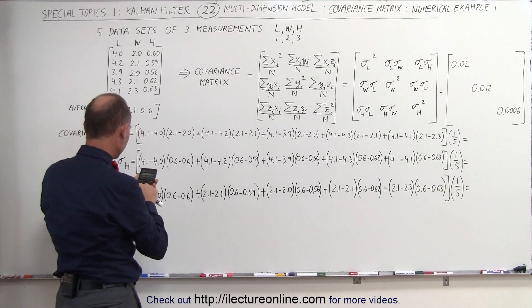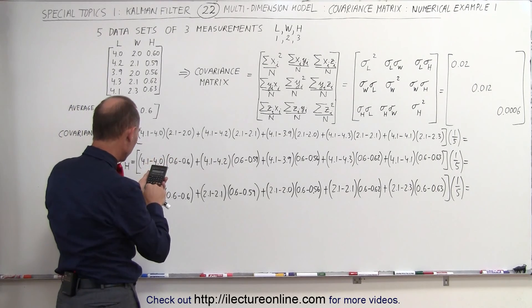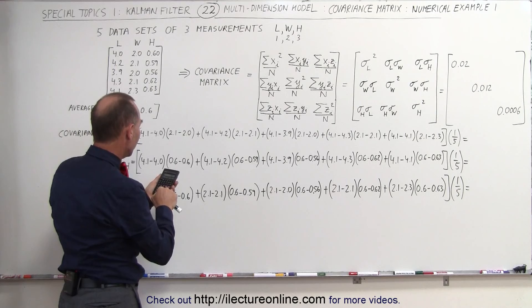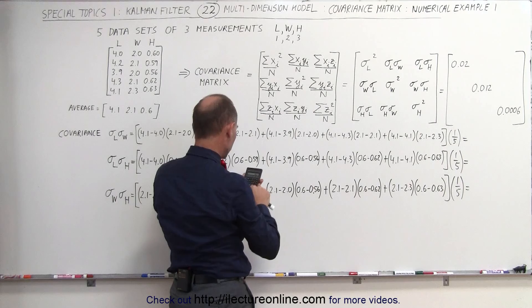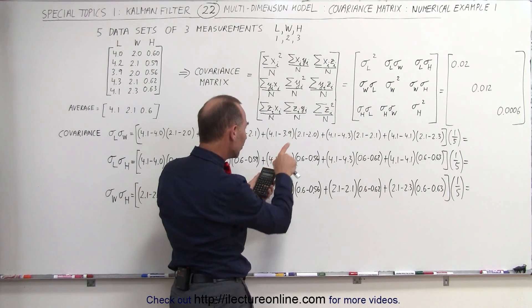So in this case that would be 0.1 times 0.1, well that would be 0 because this is 0, over here that would be 0.2 times 0.1.